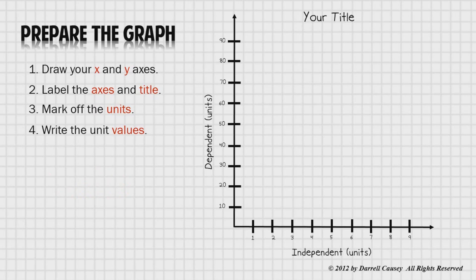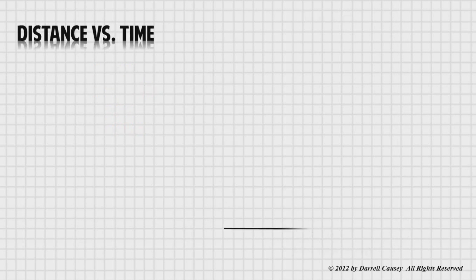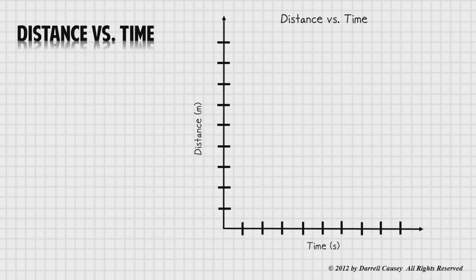Alright, so let's talk about distance versus time graphs. Let's draw our axes. I'm going to label it distance versus time. Time is my independent in this case and distance is my dependent. How far I go depends on my time. Alright, let's draw a graph. There's our units and let's label them off. And there's my graph. Nice, neat, clean, ready to go.